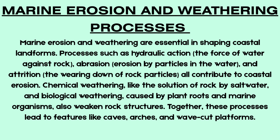Mass movement processes include rock falls, where loose rocks fall from a cliff face; landslides, where entire sections of a slope move downslope; rotational slumping, which involves curved surfaces and often occurs in weak clay; and soil creep, a very slow form of movement. These processes are especially active on weak, unconsolidated cliffs and are often triggered by heavy rainfall or undercutting by wave action at the base of cliffs.